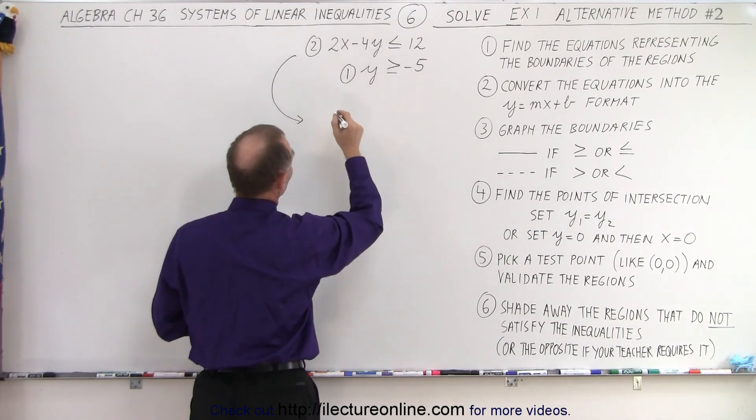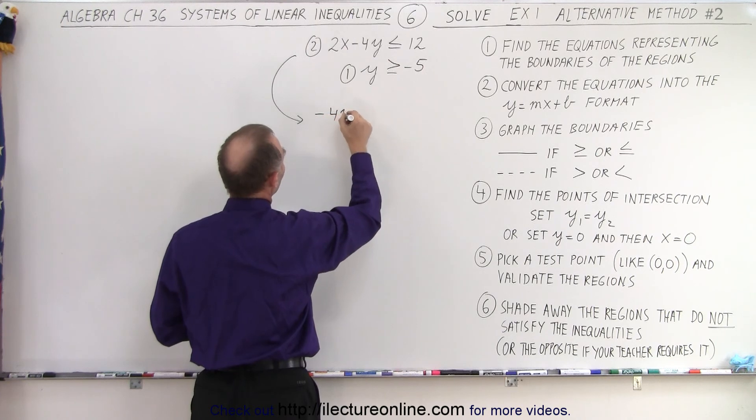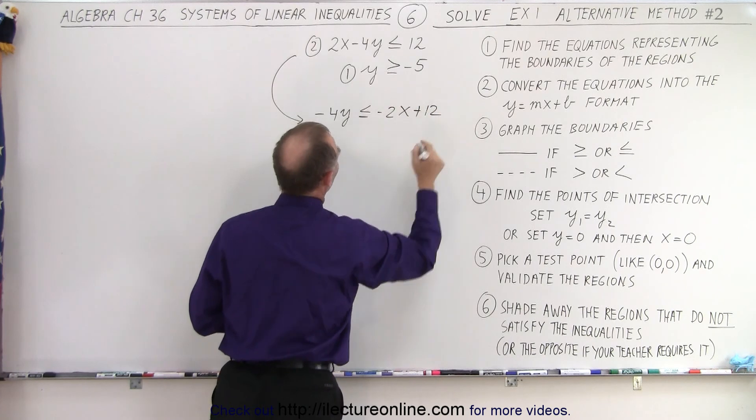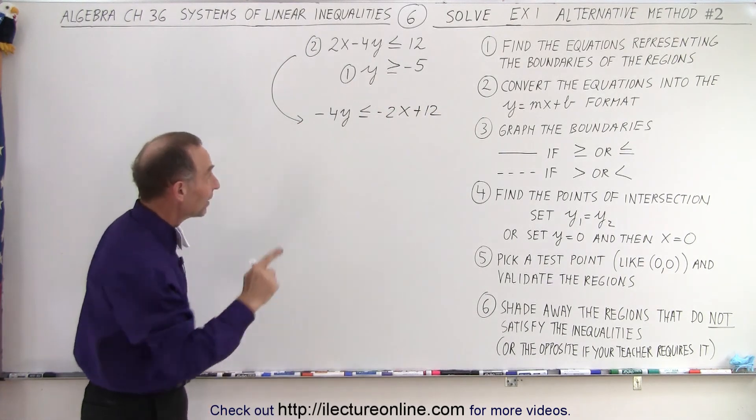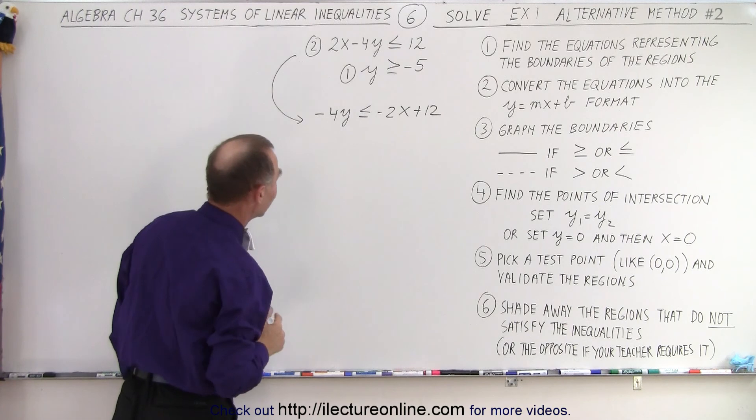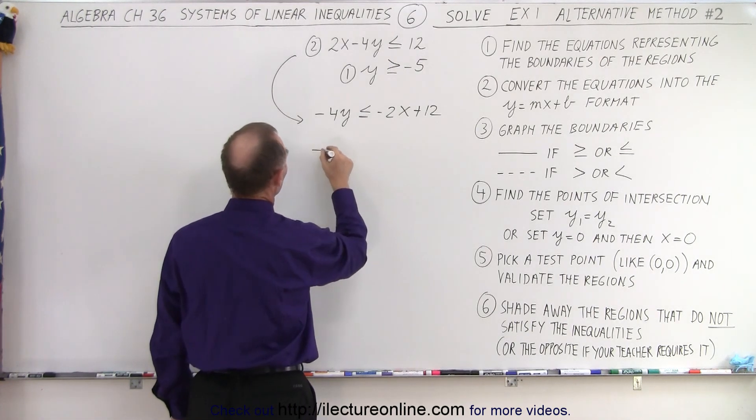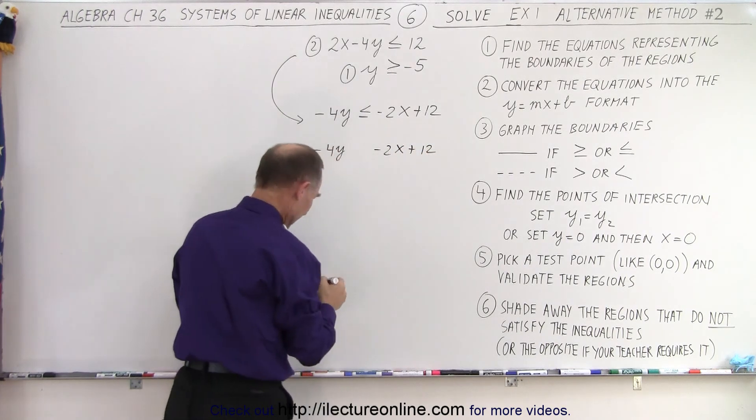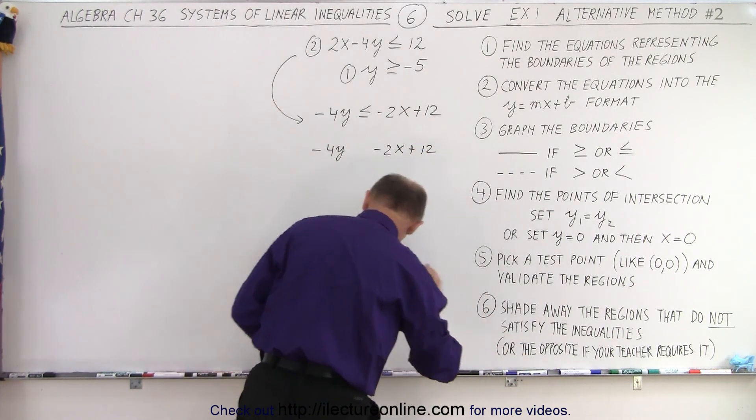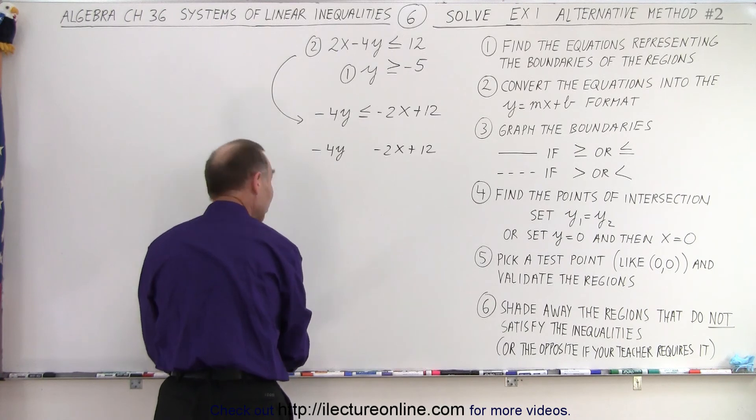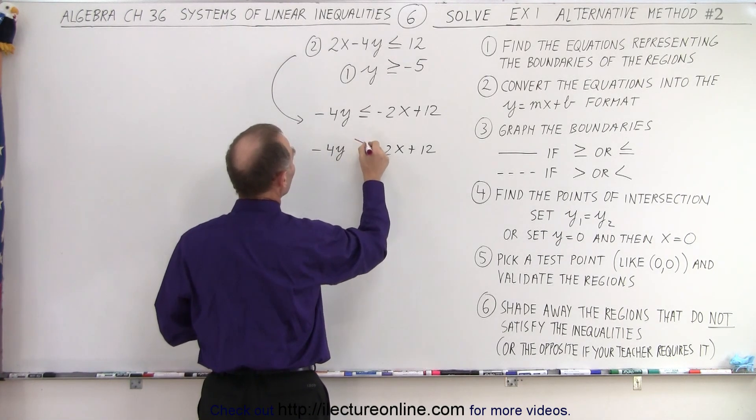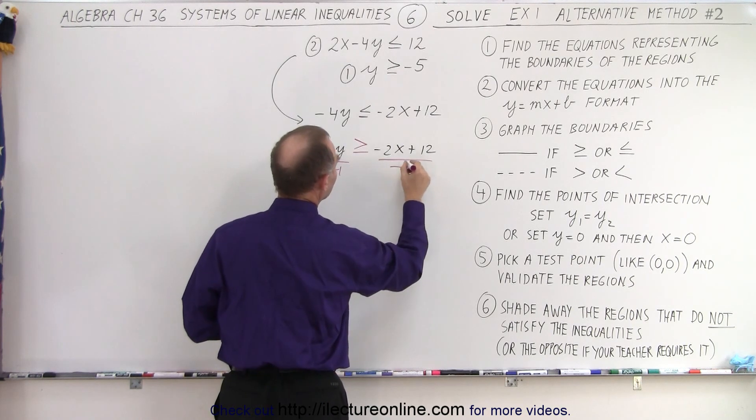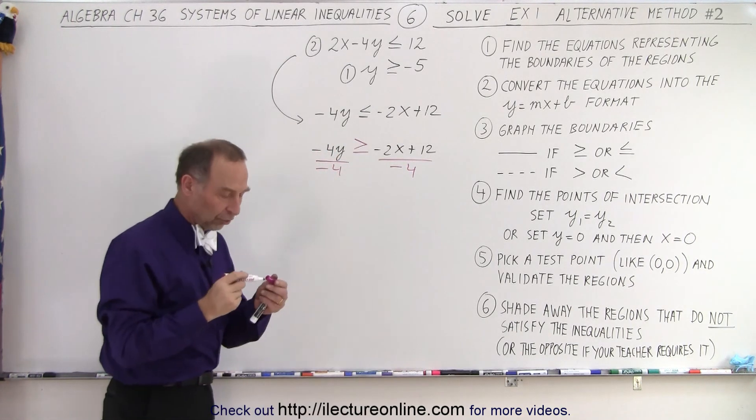So here, first we're moving the 2x to the other side, so -4y ≤ -2x + 12. But now, since we're going to divide both sides by a negative number, we have to flip the inequality sign around. So let's do that: 4y, -2x + 12. I'm going to put that in a different color so we can see the difference. We're going to turn the inequality sign around like this because we're dividing both sides by a negative number.